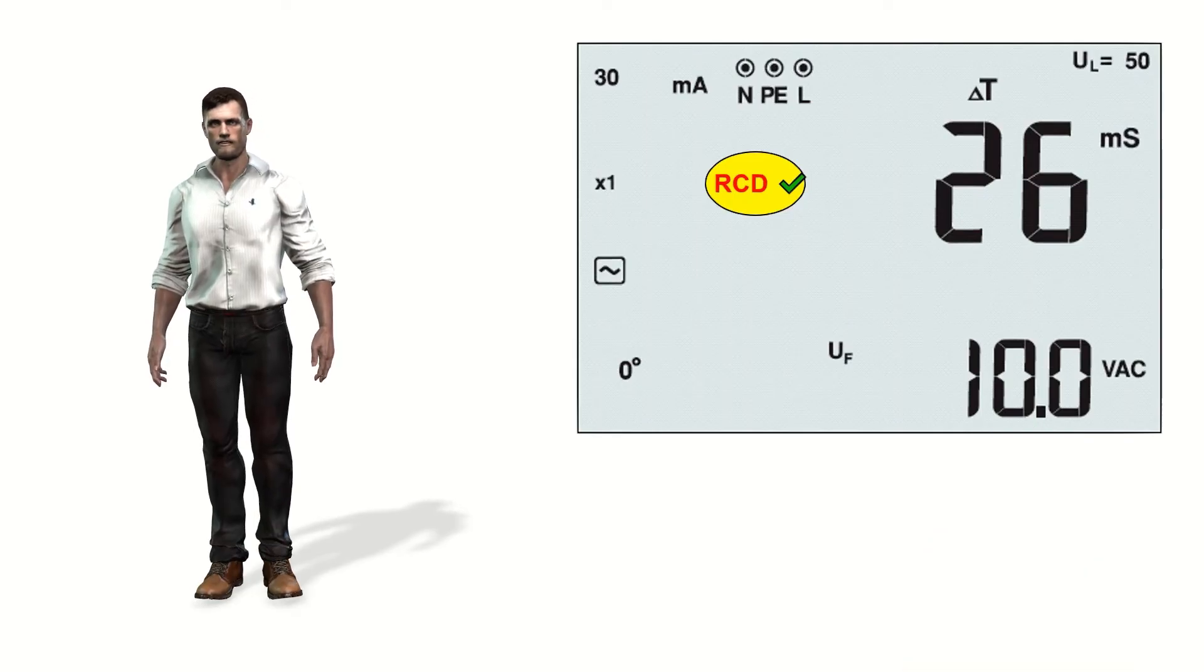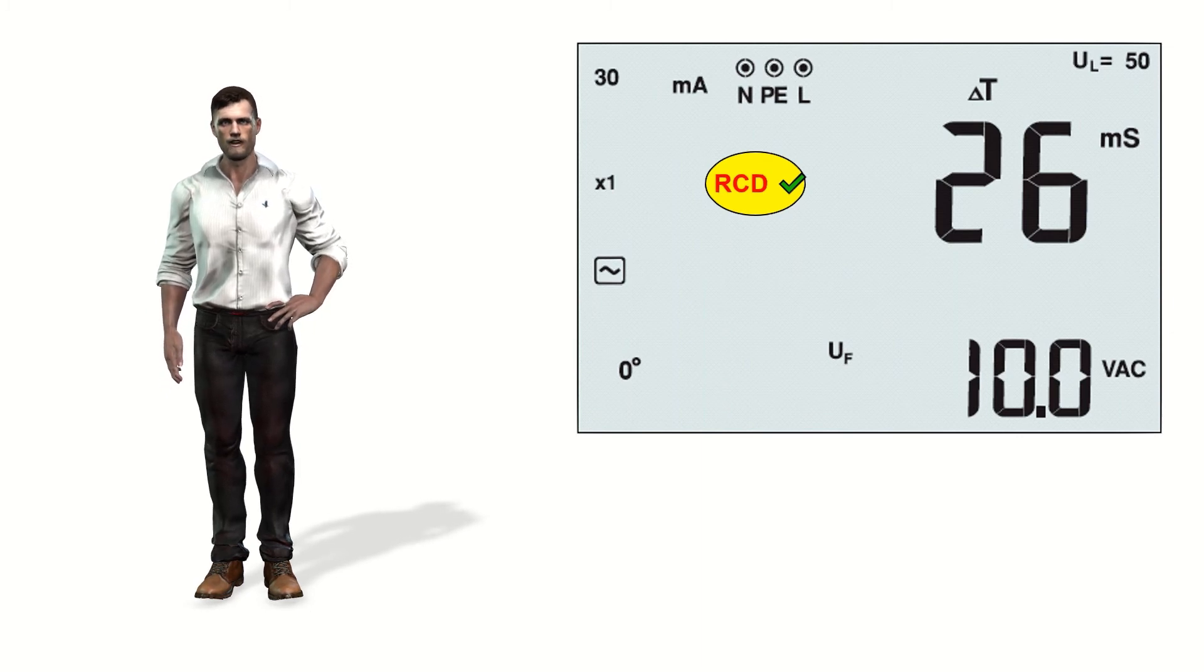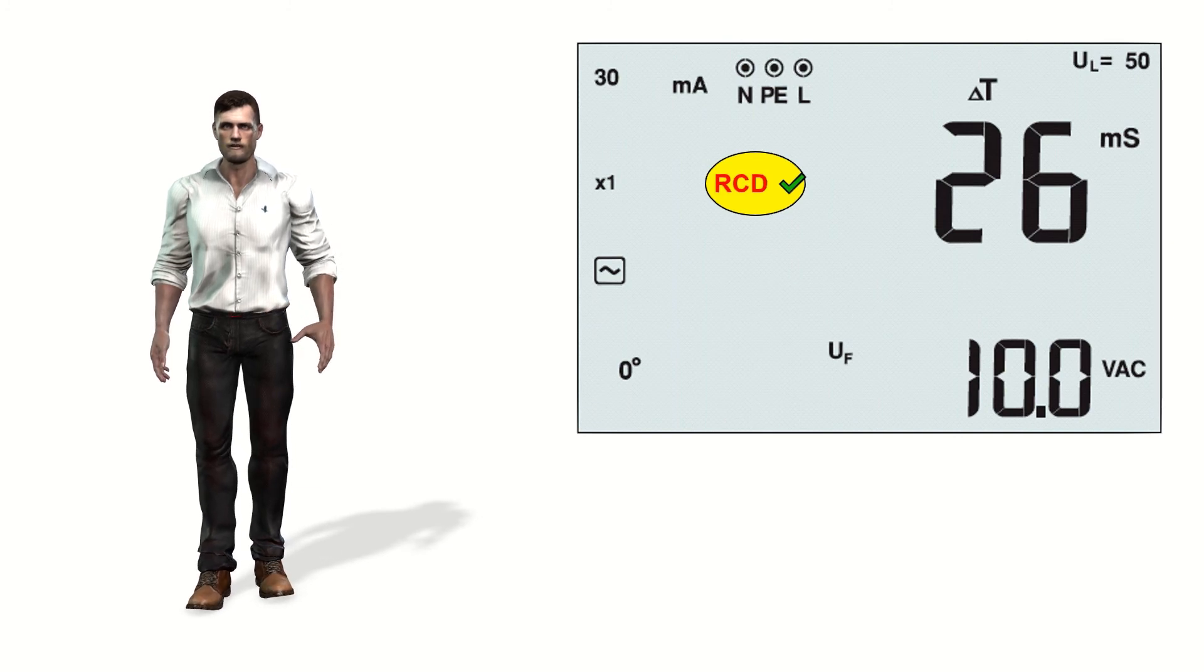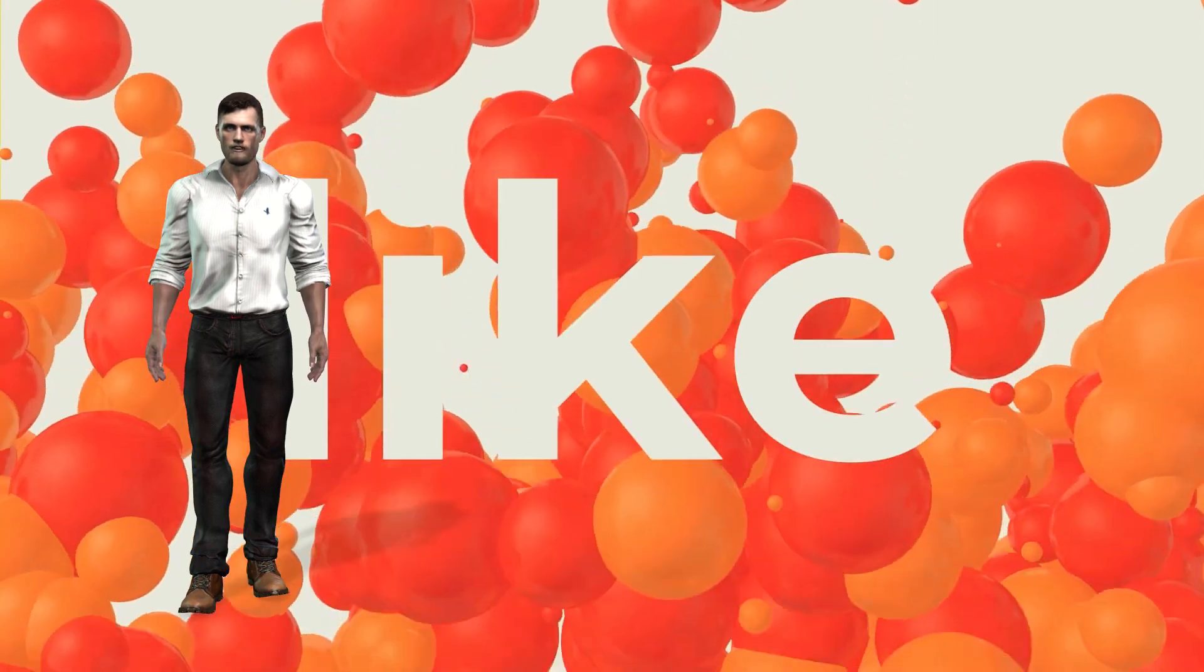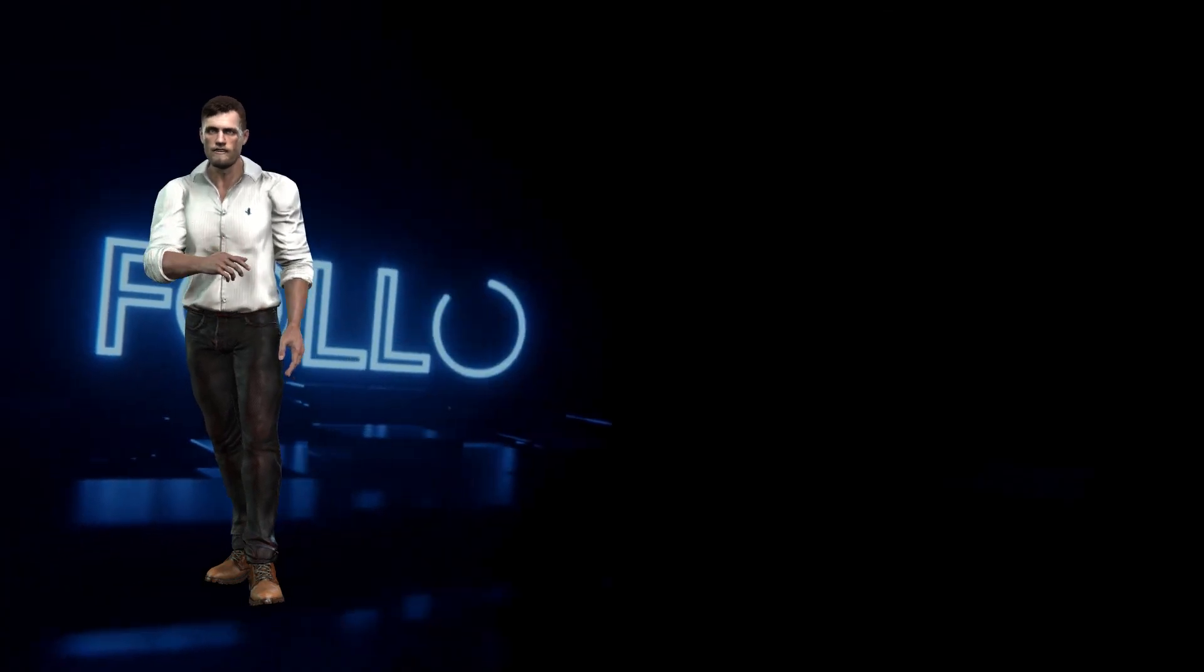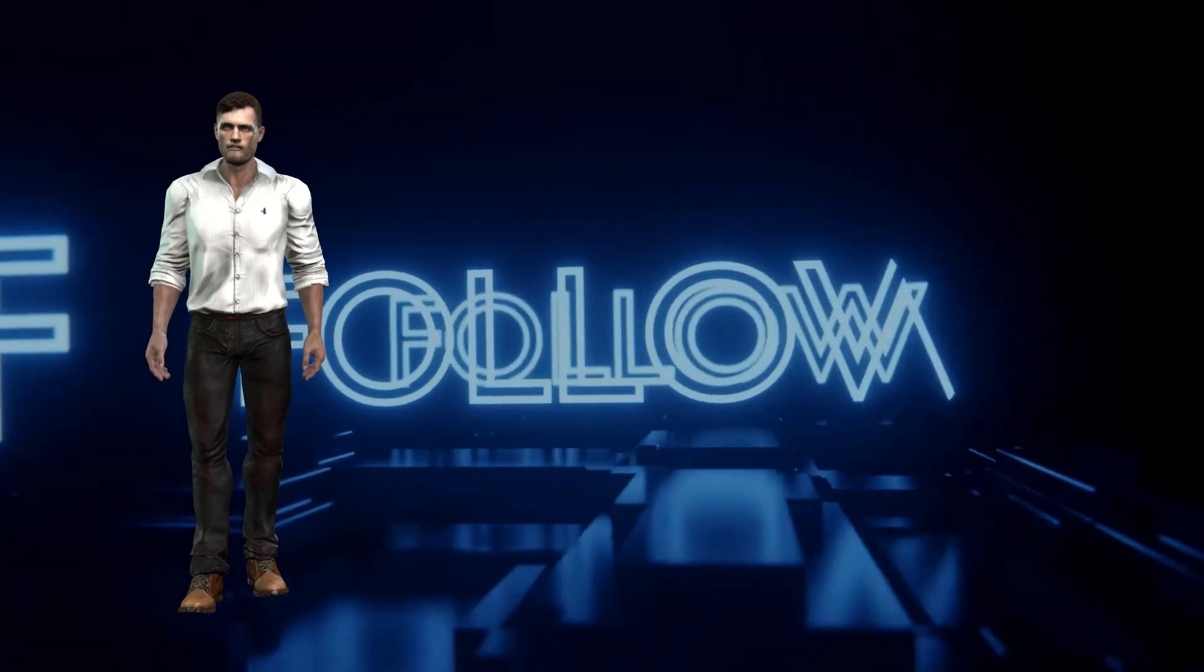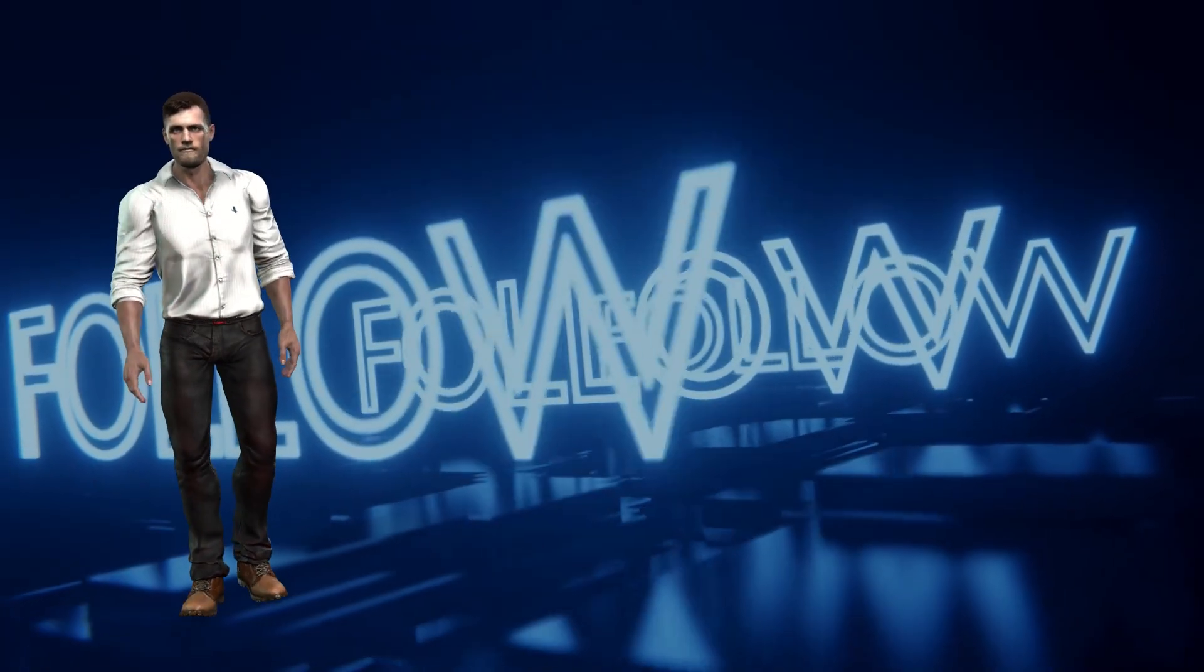In the case of a multifunction tester of the Fluke 1660 series, the instrument itself will show us on the display with a pass symbol, if the differential complies with the maximum opening times mentioned above. And so, we have reached the end of this presentation that I hope you have found interesting. If that is the case, don't forget to drop a like, so that I know that you liked it. In a future video I will show you more aspects related to differential protections, so if you don't want to miss it, don't forget to subscribe to this channel and activate the notification bell. See you in a next video. Bye.